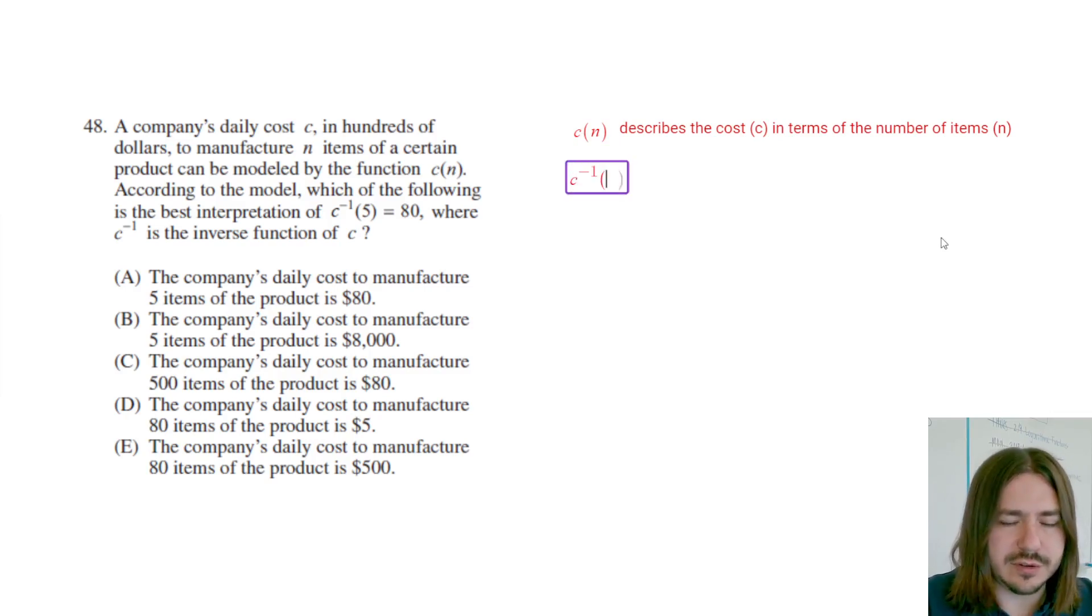So it's saying that this is the inverse. If C of n is the original function, and this is the inverse of that function, we want to know what's the inverse when this is 5 and this is 80.